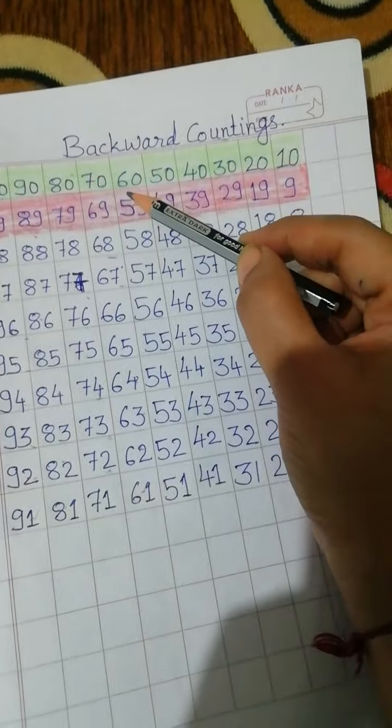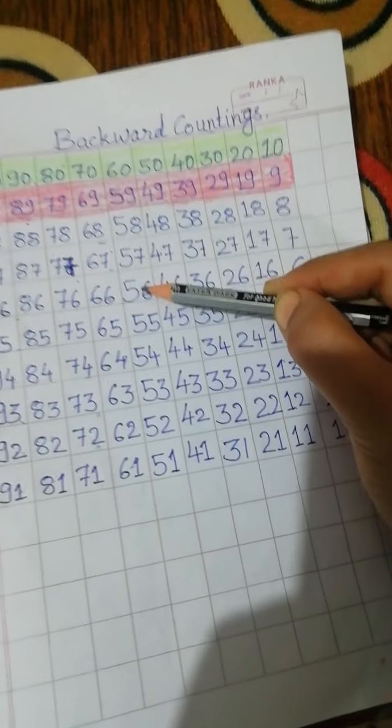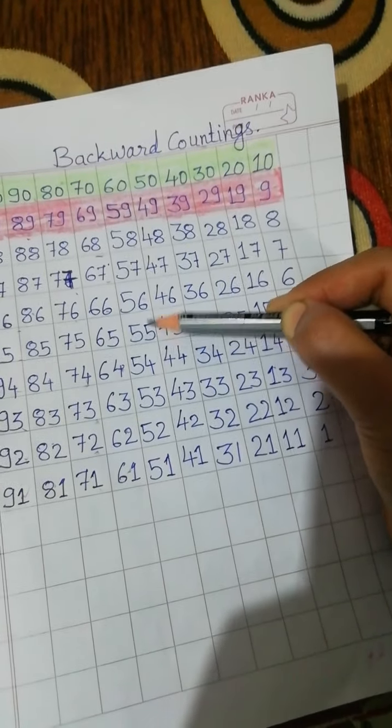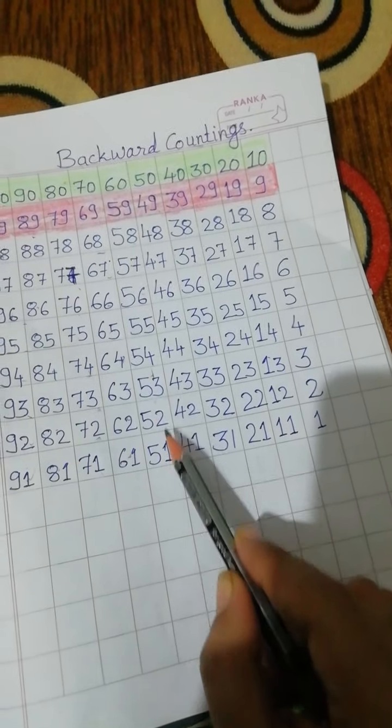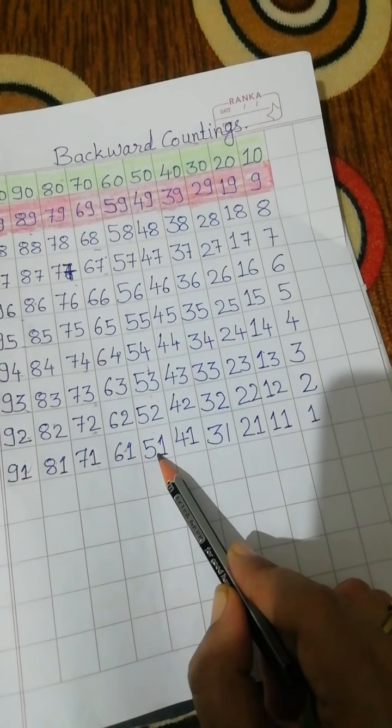Like this, you can write from 60, 59, 58, 57, 56, 55, 54, 53, 52, and 51.